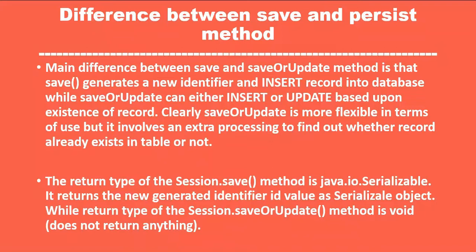The main difference is that the save method generates a new identifier, inserts a record into the database, and returns that identifier. The saveOrUpdate method, on the other hand, can either insert or update based on the existence of the record. It is more flexible but involves extra processing.